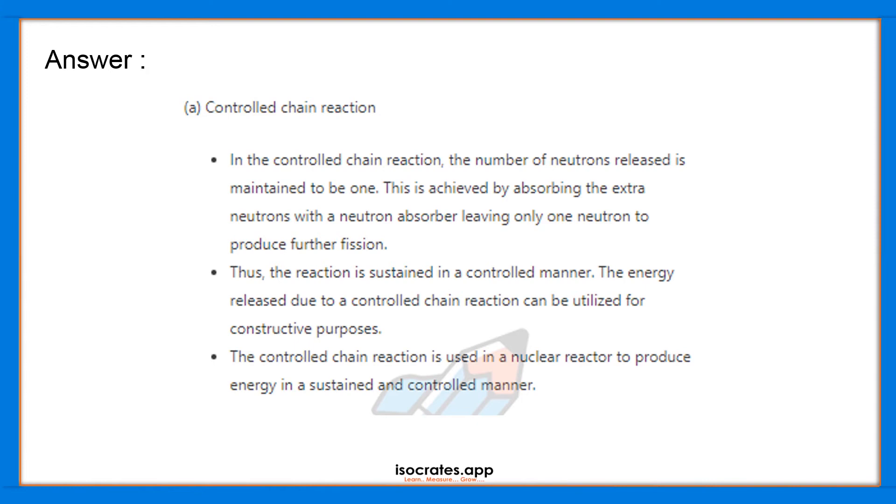That is, to produce current or power from, for example, the nuclear reactor. So this is the application of controlled chain reaction, and this is what controlled chain reaction means.